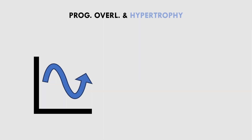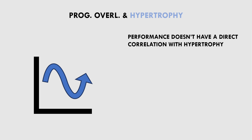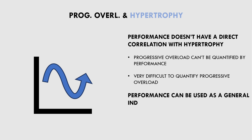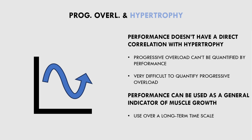So as we can see, muscle growth doesn't have a direct correlation with lifting performance, and progressive overload can't be entirely quantified using lifting performance for hypertrophy training. Rather, progressive overload is actually muscle stress, which makes it very difficult to measure and quantify. However, lifting performance can be a good general indicator of muscle growth from a long-term perspective. If a trainee is lifting more weight or more reps with the same strict technique from month to month or year to year, then there is a good chance they are growing the prime movers of that lift.